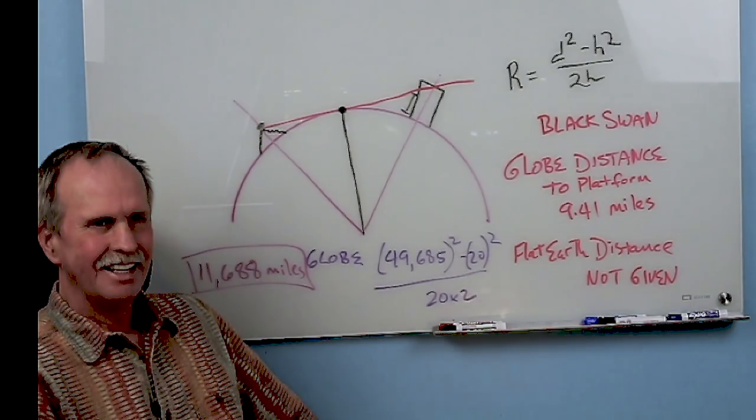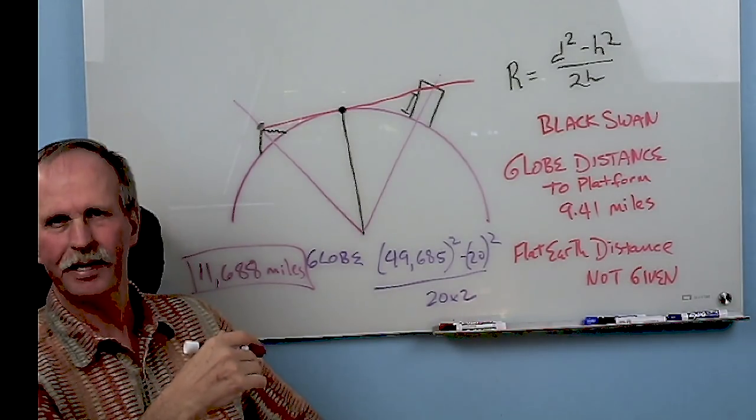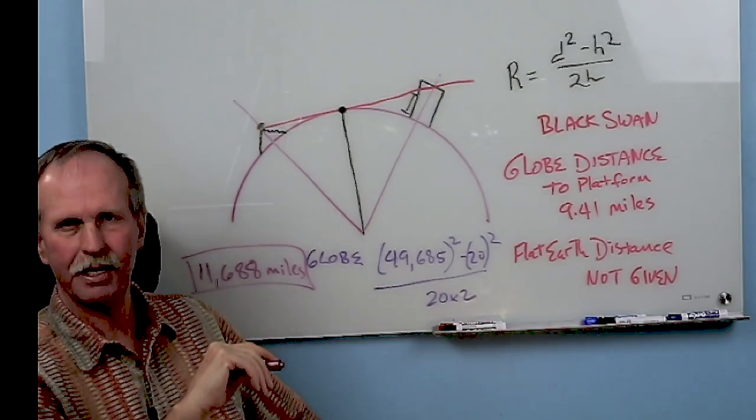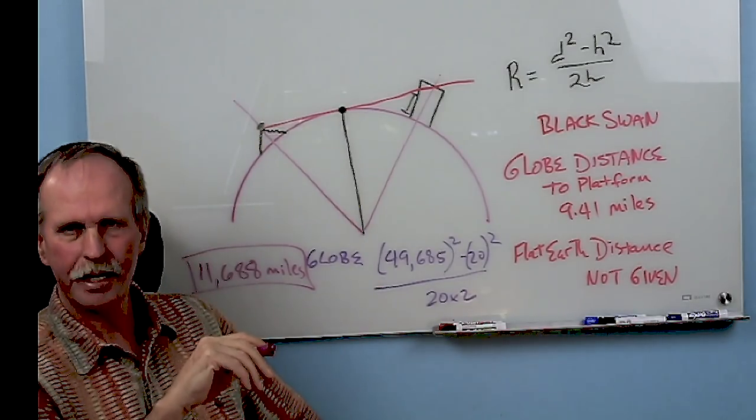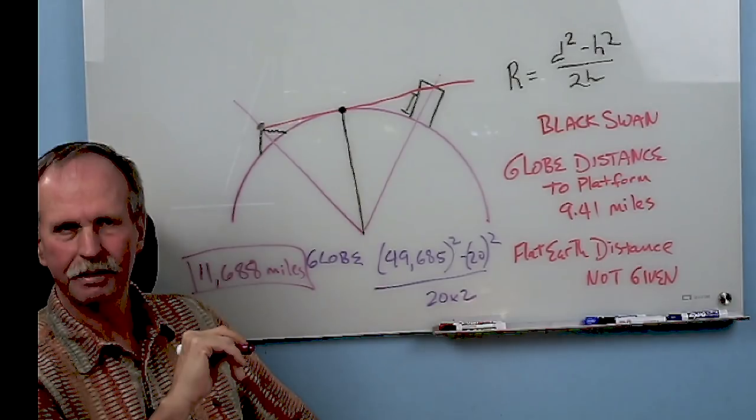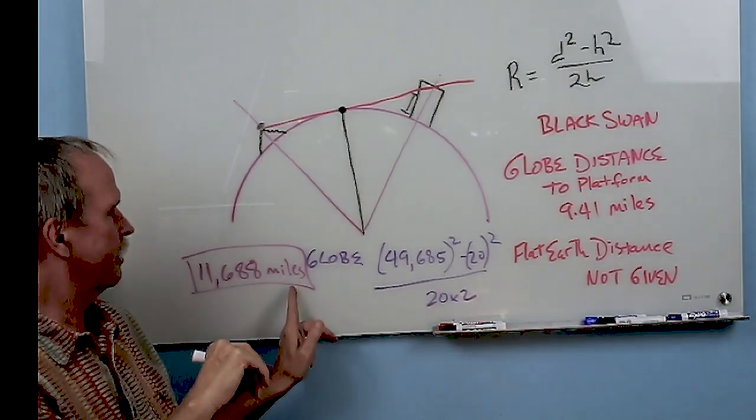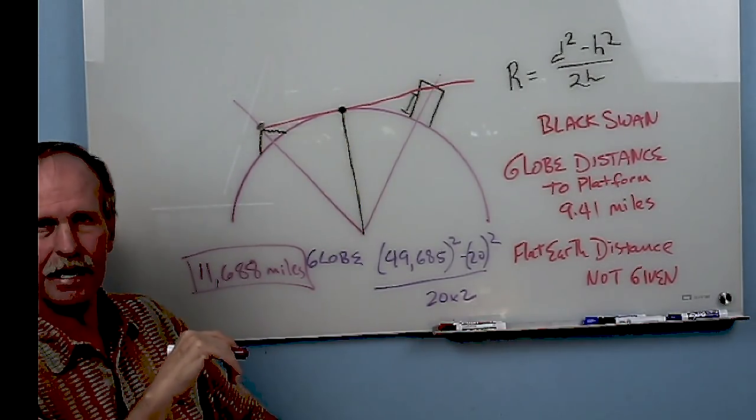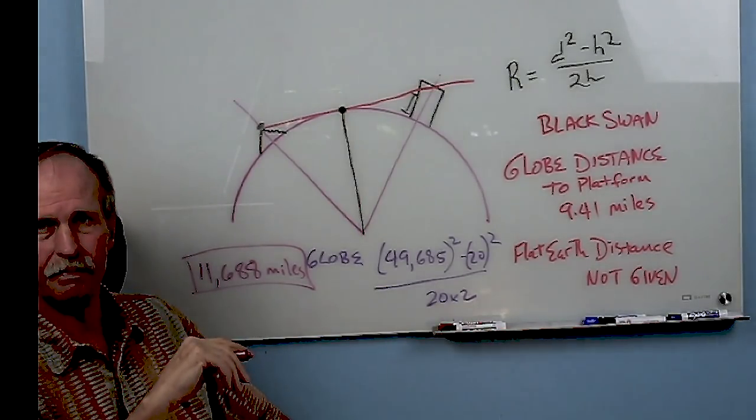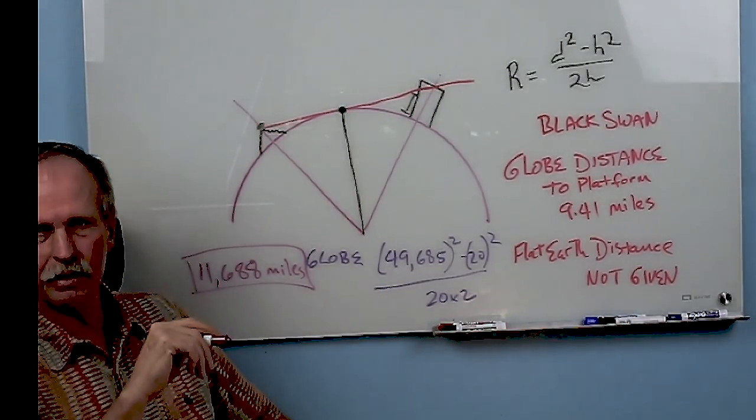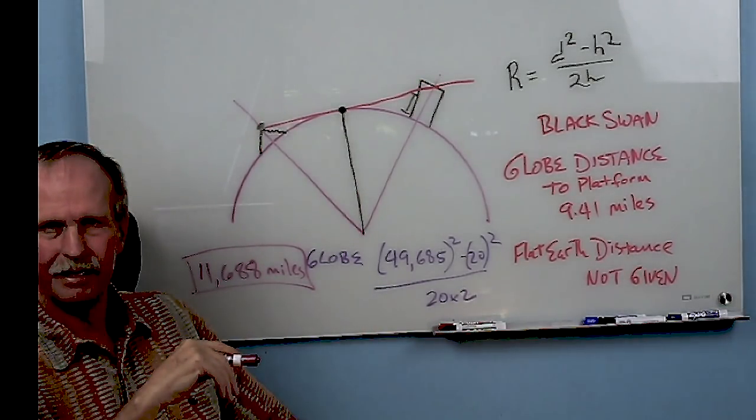If you plug all the numbers into the formula with the Black Swan at one foot observer height and distance to the horizon is 10 miles, guess what you get for the radius of the Earth? Right there, baby. 264,000 miles. You know, I think it's important to note that that's more than the radar measured distance from the Earth to the Moon. So, here's the bottom line, QE. When you try and do middle school math and you come up with a weird answer like this that makes no sense, you did something wrong.